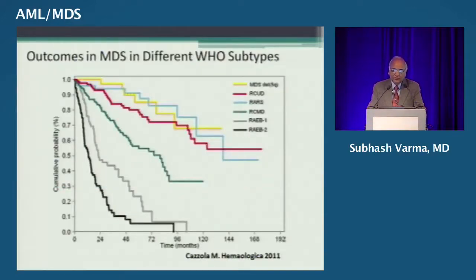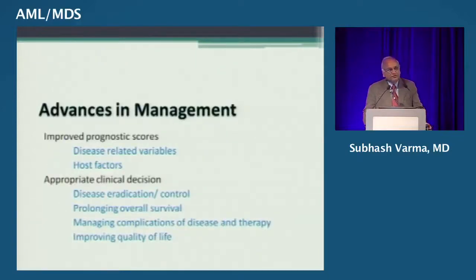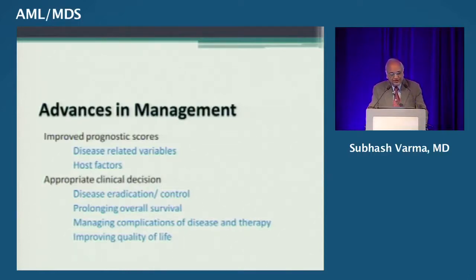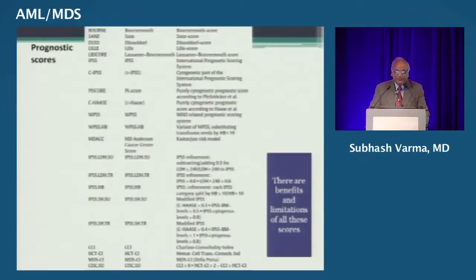When you look at the WHO subsets, it does separate out good prognosis from relatively poor prognosis. When we talk of advances in management, we are looking at two things: has our capacity to prognosticate these patients improved over time, and can we risk-stratify them for particular forms of treatment? Can we take care of host factors, and can we make appropriate clinical decisions on disease eradication or control, prolonging overall survival, managing complications, and improving quality of life?